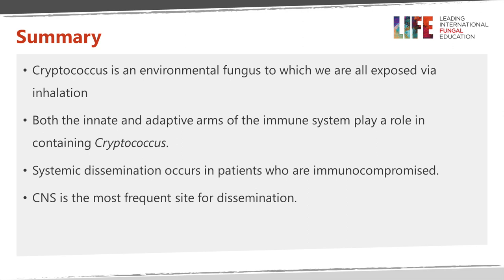In summary, cryptococcus is an environmental fungus that we are all exposed to through inhalation into the lungs. In most cases the infection is contained, due to both the innate and adaptive arms of the immune system. However, in patients who are immunocompromised — particularly those with advanced HIV and a CD4 count less than 100 — dissemination via the bloodstream occurs into many organs, with the brain being the most frequent site of infection.